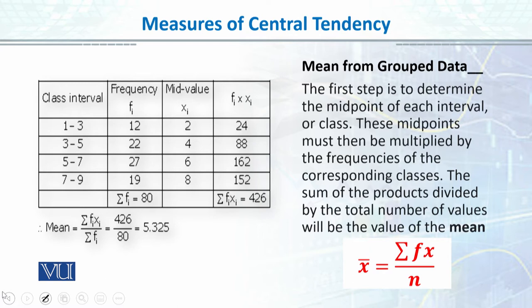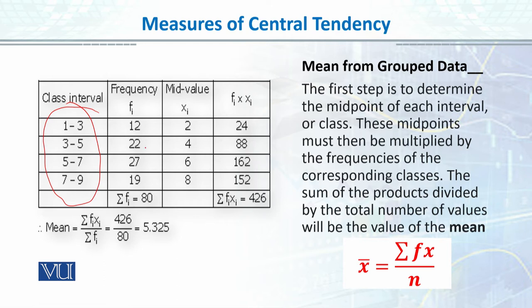Now, mean from grouped data — just as we created frequency distributions, when we have a large number of data points, for example 100, 200, or 300 data points, we group them into class intervals. On the screen you can see we have data with 80 observations, with scores on a test from 1 to 10, and we have formed classes with their corresponding frequencies, as we learned in the previous lecture on frequency distributions. To find the mean from grouped data, we need an extra column which is the x column, the midpoint column. To find midpoints, we add the lower limit and upper limit and divide by 2 to find the center of each interval. So 3 plus 1 divided by 2 equals 2. We find midpoints for each class interval.